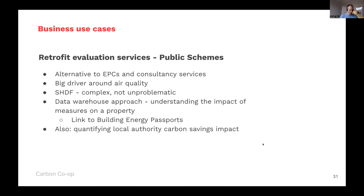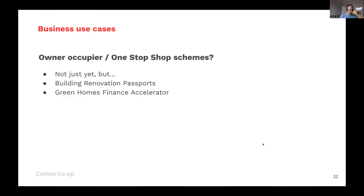There's obviously a link to the building energy passports agenda — a digital log book attached to each property, which is a high-level policy ambition. There's also strong interest in quantifying local authority impacts. For owner occupiers and one-stop shops, we're not there yet — occupancy inaccuracies at single-property level mean there isn't a deployable tool right now, although we've learned a lot about what householders want. There is the building renovation passport agenda, the Green Homes Finance Accelerator, and Green Finance Institute advocacy, so further innovation is needed but there is certainly demand and opportunity.